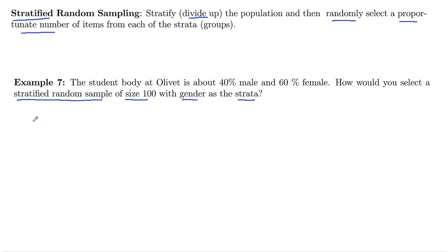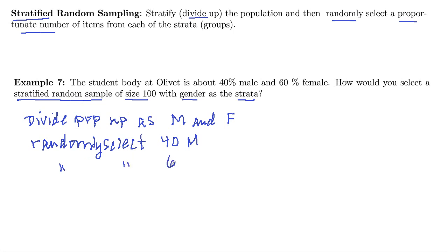So what we're going to do is divide the student population up as male and female, and we will randomly select 40 males, and then randomly select 60 females.